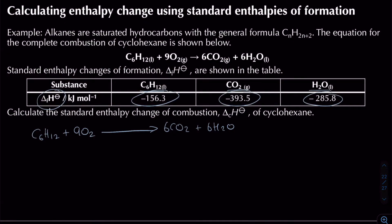To form the cycle, we write balanced equations forming both reactants and products from their elements: 6C(s), 9O₂(g), and 6H₂(g). The formation arrows point upwards toward the reactants and products of the combustion equation, giving us our correctly oriented cycle.